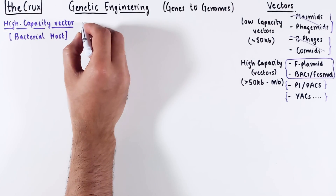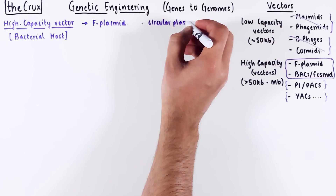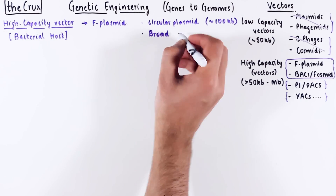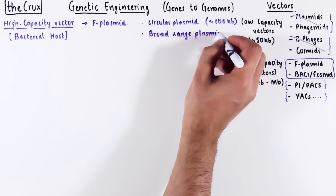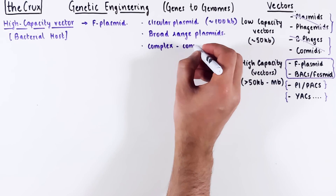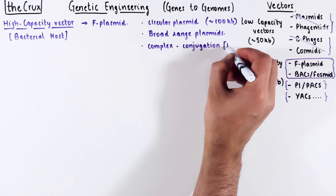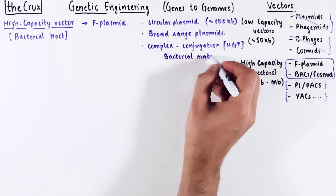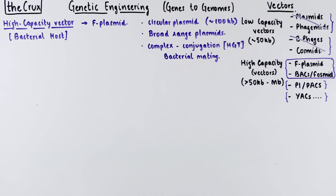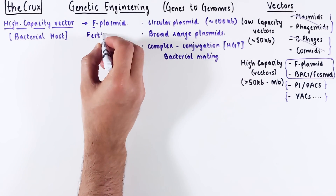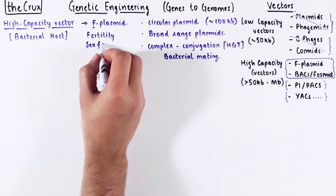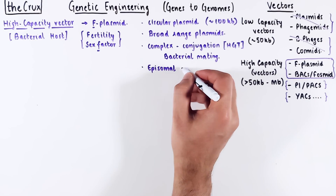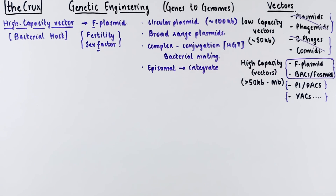It all starts with the F plasmids, which are really large circular plasmids of about 100 KB that live in a wide range of bacteria. I talked about this broad range capability in the video on plasmids. They are immensely complex. You have very likely heard of them in either horizontal gene transfer or bacterial mating. F in the plasmid comes from fertility, or its involvement as a sex factor. These plasmids are typically episomal, meaning non-chromosomal, but at times they can integrate into the bacterial genome.